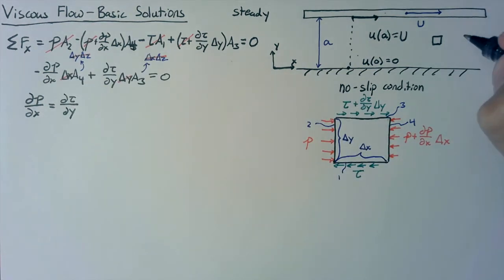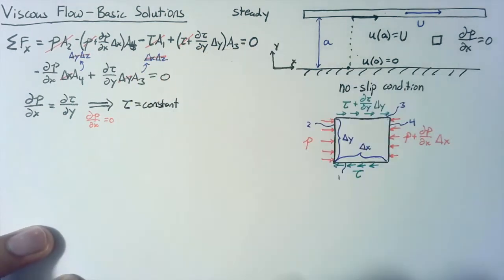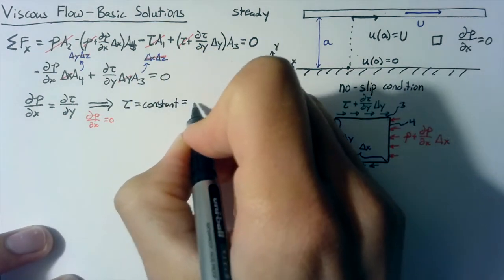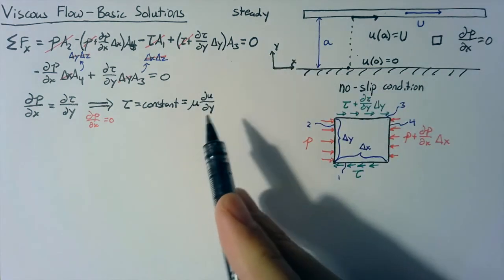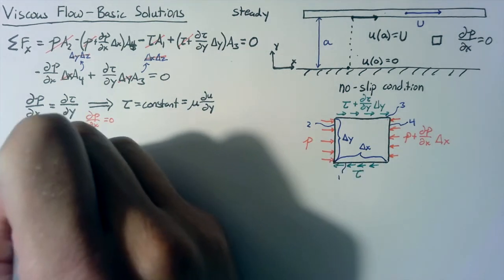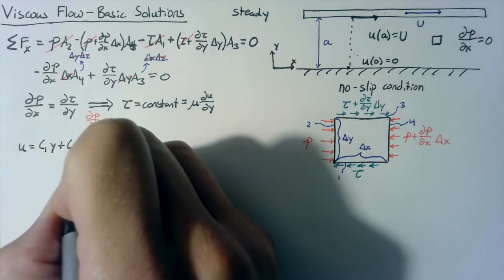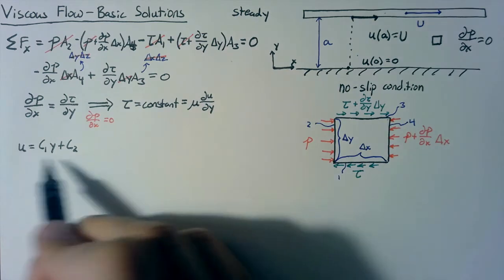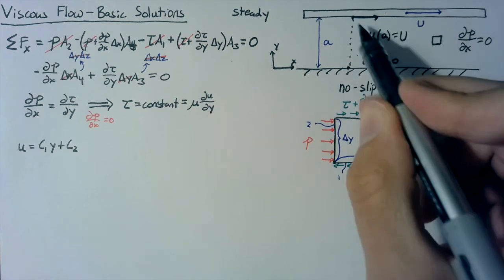Let's say that the change in pressure for this situation is equal to zero. Now if that's the case, then that means that tau is going to be a constant. And since tau is equal to mu times du dy, du dy is also going to be a constant. So we can write that u is equal to c1, some unknown constant, multiplied by y, plus another unknown constant, c2. And then all we need to do from here is just write in our boundary conditions that we've defined from our picture.